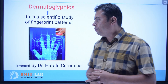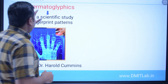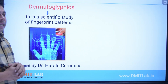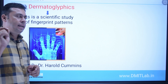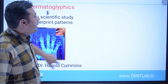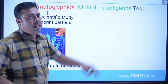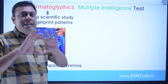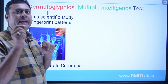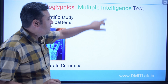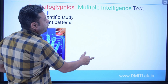Now the next abbreviation: 'MI' stands for Multiple Intelligence. In general, DMIT is also called the DMIT test, which stands for the Multiple Intelligence test. So what do we do in multiple intelligence?